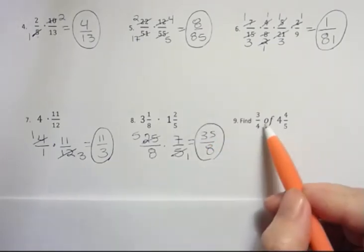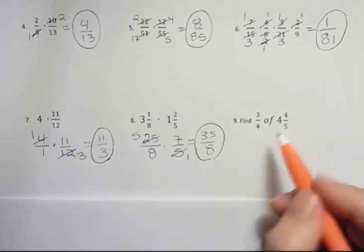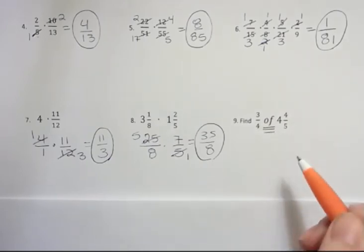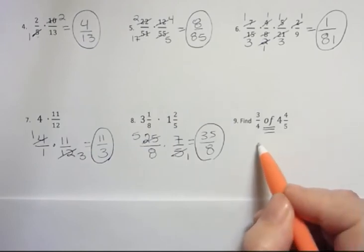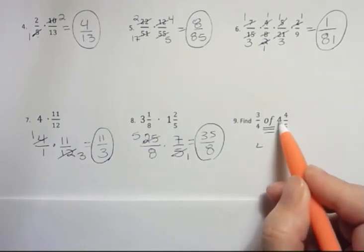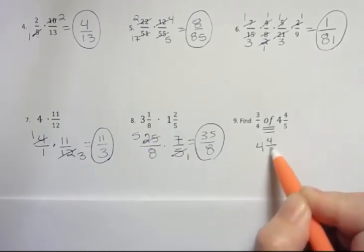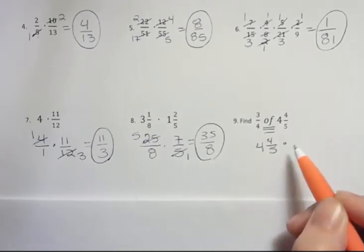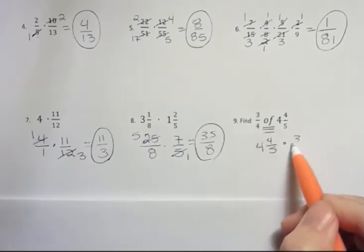This one says find 3/4 of 4 and 4/5. The of means multiply. So 3/4, I'm going to take 4 and 4/5. I'm going to change that into an improper fraction in a second, times 3/4.